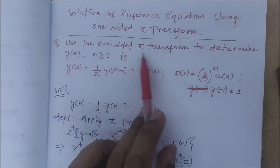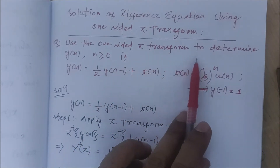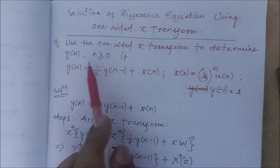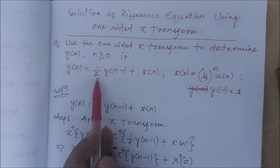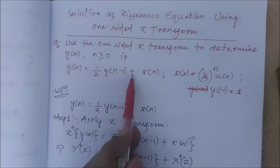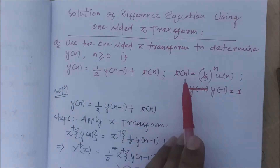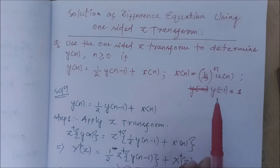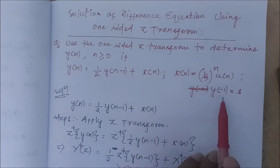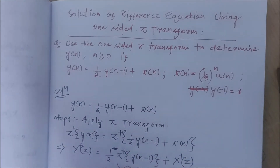The question is: use the one-sided Z-transform or unilateral Z-transform to determine y(n), where y(n) = (1/2)y(n-1) + x(n). The input is given as x(n) = (1/3)^n u(n), and the initial condition is given as y(-1) = 1.